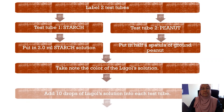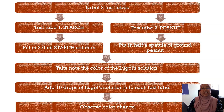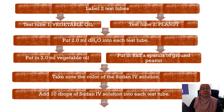This procedure is carried out to determine the presence of polysaccharide. Label two test tubes: test tube one for starch, test tube two for peanut. In test tube one, put in 2 ml of starch solution; in test tube two, put in half a spatula of ground peanut. Take note of the color of the Lugol's solution, then add 10 drops of Lugol's solution into each test tube and observe any color changes.